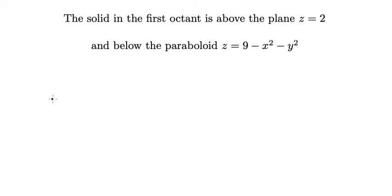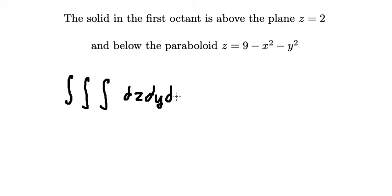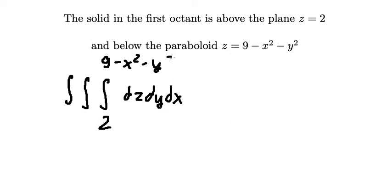We can set up the triple integral with dz dy dx. For the z bounds, the plane z equals 2 is the bottom, and the top is 9 minus x squared minus y squared.